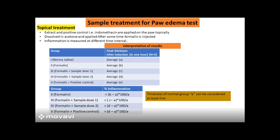We can also apply the sample or a standard drug topically. In the case of topical treatment, we dissolve the sample in acetone and apply it on the surface of the hind limb. Similarly, we apply indomethacin topically, and then measure the inflammation after injecting the carrageenan or formalin. First, we apply the sample, and then inject the inflammatory agent.